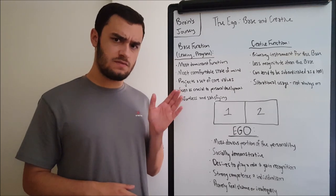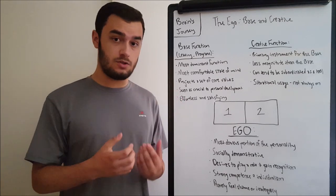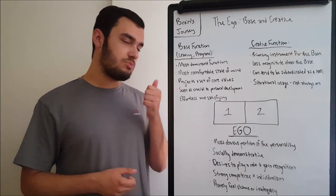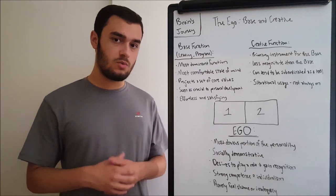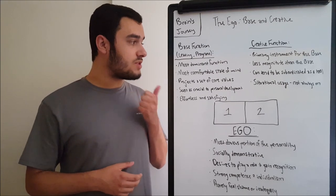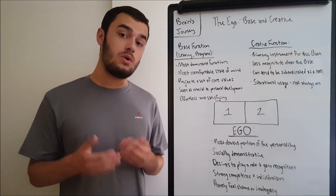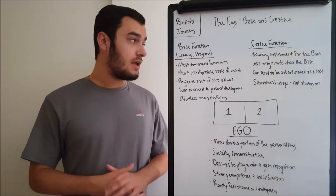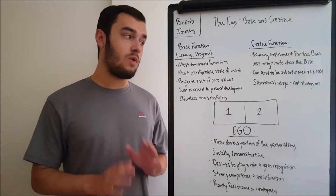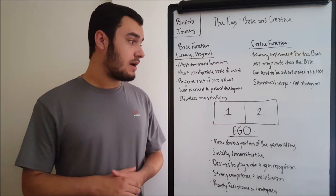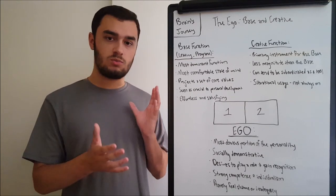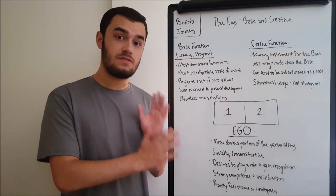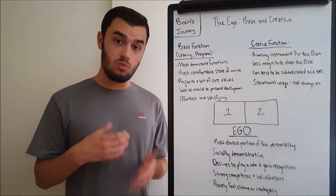First off, we want to look at the base function. The base function is the dominant function of the individual. It is what they prize the most in their life. You may see it also called the leading function or the program function, depending on what kind of articles you read. It is the most dominant function. It is the individual's preferred mode of operation. It is what they do upside down at four in the morning. It really does not go away, and it is the continued presence in their life what makes up the core of their personality, basically.